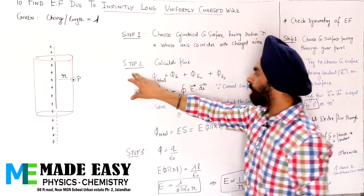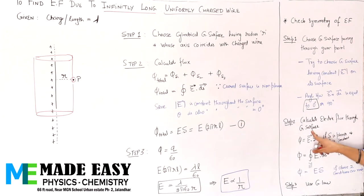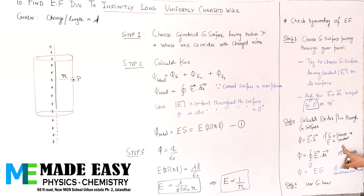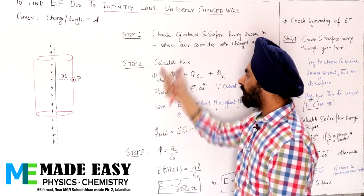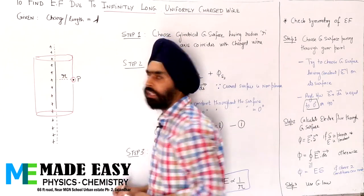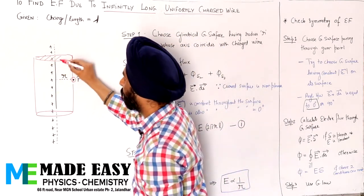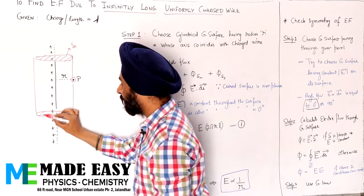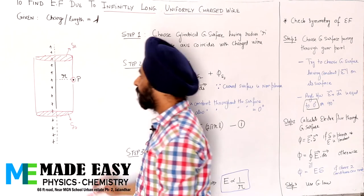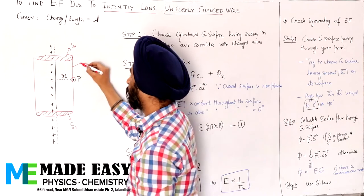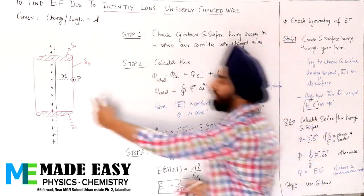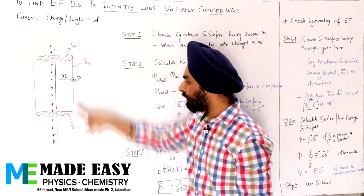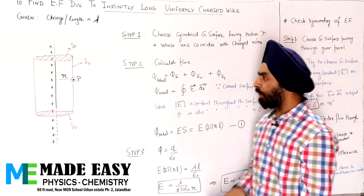Step 2: calculate flux. We know the flux formula applies when the area is planar and the electric field is constant over that area. If E is not constant over the entire surface, we use the integral formula. Now, this Gaussian cylindrical surface has three surfaces: surface 1 — a flat circular end (planar); surface 2 — the other flat circular end (planar); and surface 3 — the curved lateral surface of the cylinder.